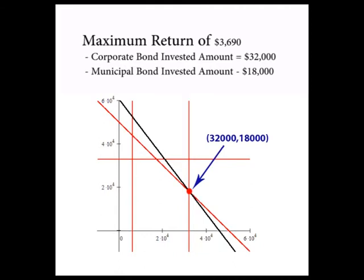Conclusion: Investing $32,000 in corporate bonds and $18,000 in municipal bonds will bring a maximum return of $3,690 given the constraints - the maximum $50,000 and the other constraints we talked about earlier.